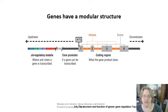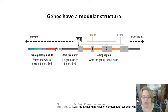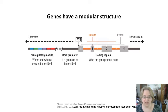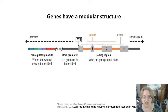Genes often have a modular structure, set up in a similar way across kingdoms. In eukaryotes in particular, upstream of the gene in the five-prime direction, you have the cis-regulatory module that tells where and when this gene should be expressed in the organism. Then you have your core promoter, which is basically the on or off switch for the gene.